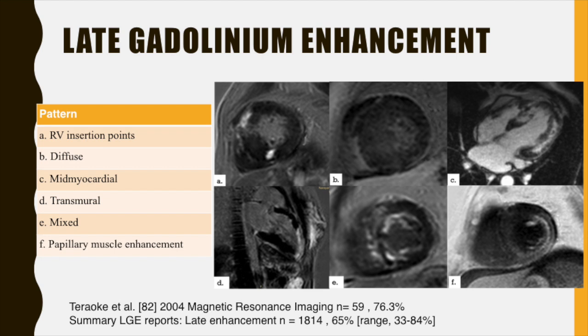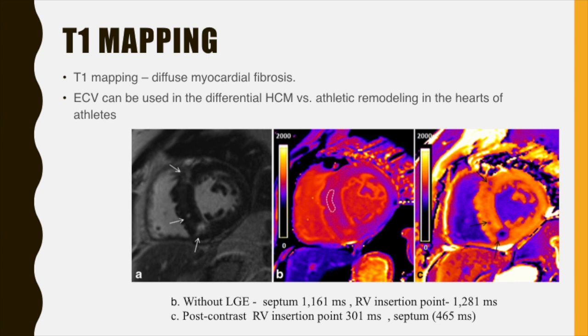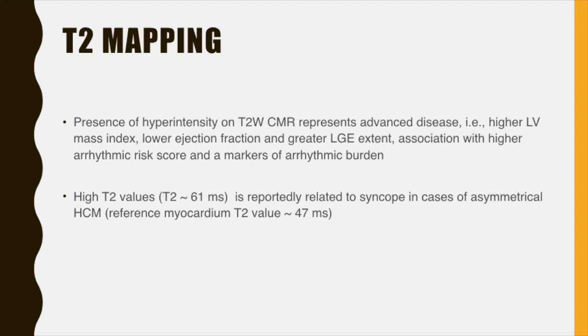Several studies have found that up to 65% of HCM patients have myocardial fibrosis and show late gadolinium enhancement. In case of diffuse myocardial fibrosis, supplementing T1 mapping is useful — as in this case where late gadolinium enhancement could identify only superior and inferior RV insertion point fibrosis, while mid-myocardial fibrosis in the septum was identified on T1 mapping as elevated native T1 time on the 1.5T scanner. Studies have also shown that extracellular volume calculated by T1 mapping can differentiate HCM from athlete remodeling. T2 mapping also shows promise; higher T2 values of up to 61 ms have been reportedly related to syncope in cases of asymmetric HCM compared to the normal myocardial T2 reference value of less than 50 ms.